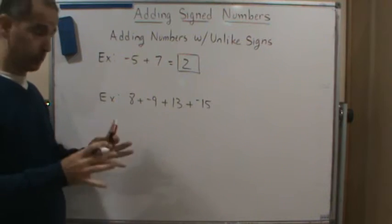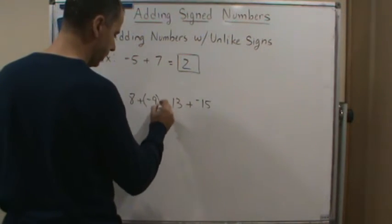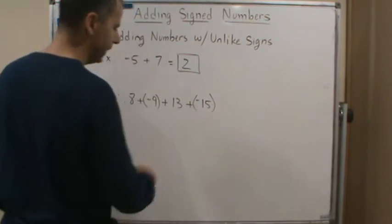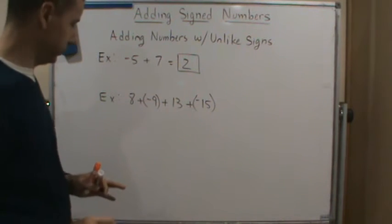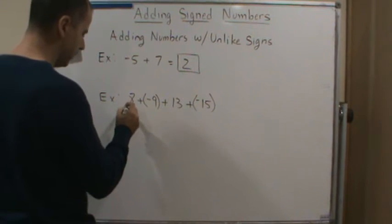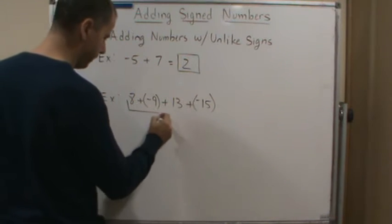But you have to do it pairwise. Now, in this case, I'm going to put parentheses around my negatives. Why? Because I want to make sure that I don't make any sign errors. So let's do these first.